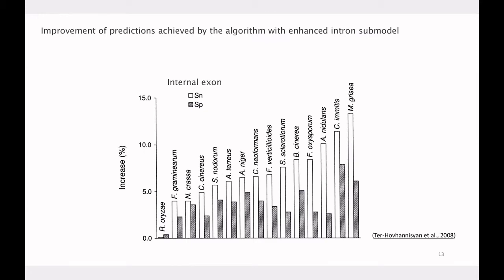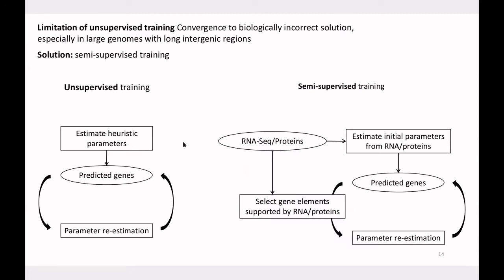GeneMark-ES for fungal genomes achieves all of this without utilizing any external evidence, and remains the best gene prediction algorithm for fungal genomes. However, unsupervised algorithms like GeneMark-ES can converge to biologically incorrect solutions, especially in genomes with long intergenic regions. The larger the genome, the more space there is for wrong convergence. This problem is solved by semi-supervised learning, which also does self-training but utilizes information from RNA-seq or proteins to select a better training set in each iteration.